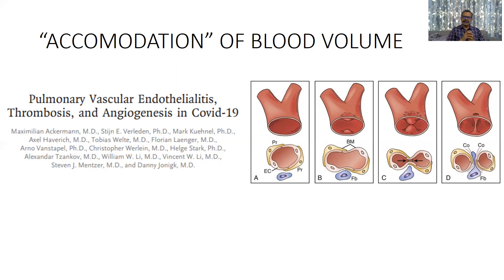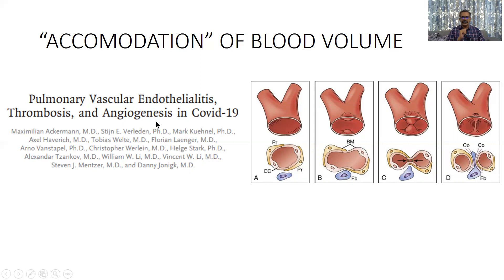A nice study by Ackerman compared autopsy findings of seven normal lung samples, seven COVID-expired lung samples, and seven influenza-expired lung samples. They found a very important finding: COVID deaths are accompanied by what is called intussusceptive angiogenesis — the formation of blood vessels. This happens in two fashions: sprouting and intussusceptive. Intussusceptive angiogenesis is commonly seen during exercise when metabolic demand increases and new vessels are formed. This new vessel formation is a hallmark of COVID.